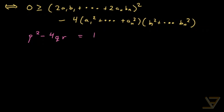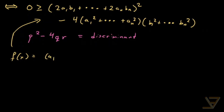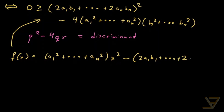And that looks like a discriminant of a quadratic. So let's go backwards and try to construct a quadratic that has this as its discriminant. One quadratic that works is f(x) equals a1 squared plus all the way through to an squared times x squared, minus 2a1b1 all the way through to 2anbn times x, plus b1 squared all the way through to bn squared.